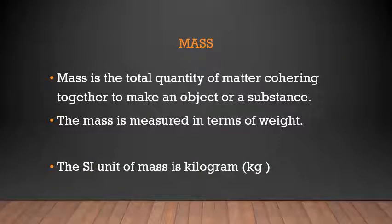So what is mass? Mass is the total quantity of matter cohering together to make an object or a substance. Cohering together means it is present together. That means if you are holding phone in your hand that phone is made up of a certain quantity or a certain mass. That mass cannot be changed unless until you change it. The mass is measured in terms of weight like kgs or grams.